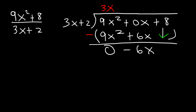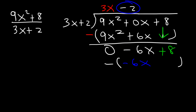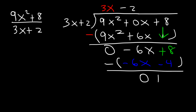Bring down the 8. Divide: negative 6x divided by 3x is negative 2. Multiply: negative 2 times 3x is negative 6x, and negative 2 times 2 is negative 4. This time the remainder is not zero. Subtract: negative 6x minus negative 6x is 0, and 8 minus negative 4 equals 12.